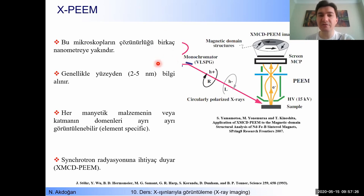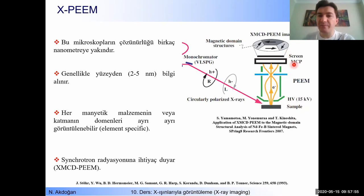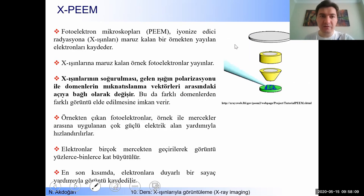Here you see the basic principle. There is a synchrotron radiation source with a beamline. X-rays come in and you can use right circularly polarized light or left circularly polarized light. Here we have a sample — a magnetic material with magnetic domains — and a high voltage between the sample and an electrode. Photoelectrons are accelerated to a CCD camera detector, and you can get a two-dimensional picture of the magnetic domains.